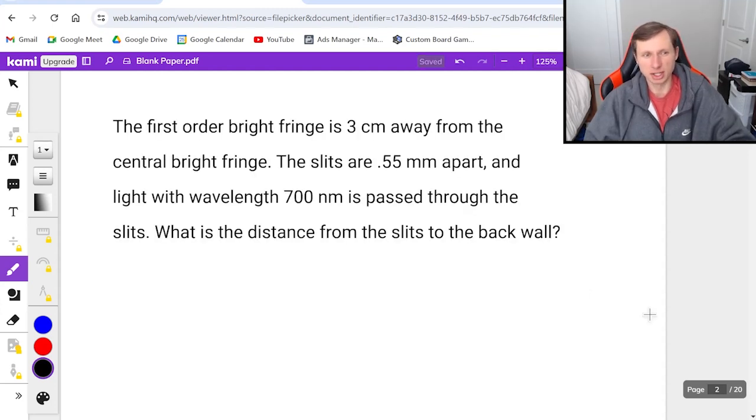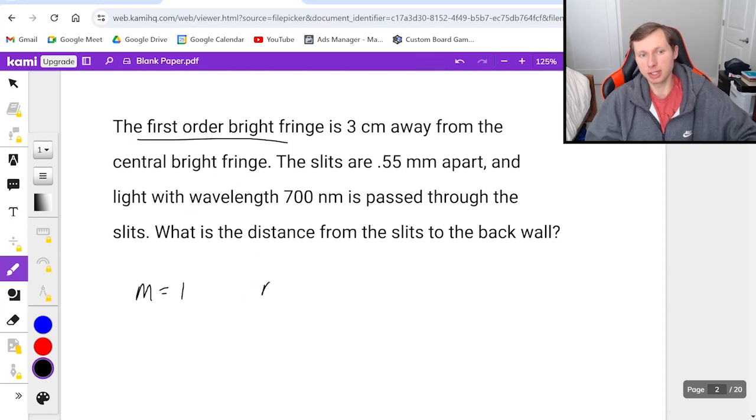Here's the first question: The first order bright fringe is three centimeters away from the central bright fringe. The slits are 0.55 millimeters apart, and light with wavelength 700 nanometers is passed through the slits. What is the distance from the slits to the back wall? First, I'll write down what I know. When they say first order bright fringe, they mean m = 1. It's the first bright fringe besides the center one, which is m = 0.